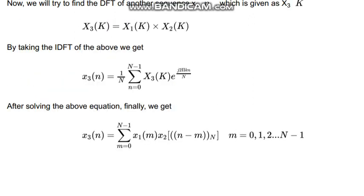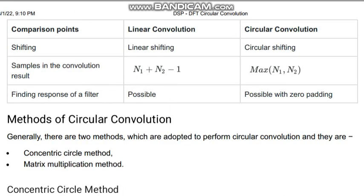Now we are heading towards the next part, that is the comparison between linear convolution and circular convolution. The shifting property of linear convolution is linear shifting. In circular convolution, circular shifting. The samples of the convolution result will be N1 plus N2 minus 1. That means if we have two sequences with different lengths, we have to take N1 plus N2 minus 1 as the elements that will get onto the output section. In circular convolution that will be the maximum of N1 and N2, not like the previous section that we use in linear convolution. And finding a response of the filter is possible, but is possible with zero padding, that is circular convolution.